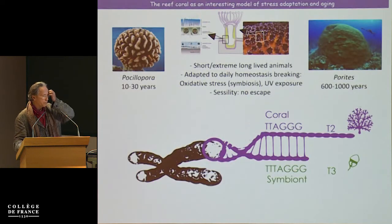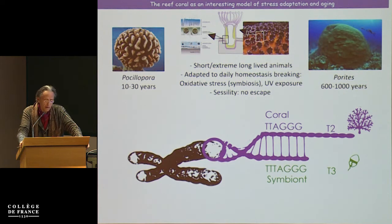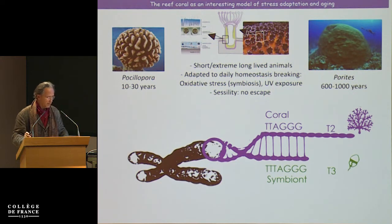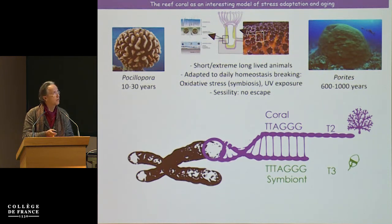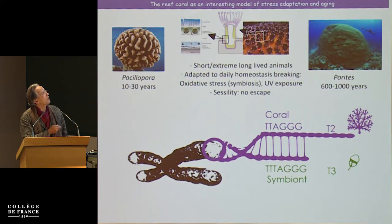The second story starts from the same question but focuses on corals. Corals are animals and are very interesting for research on adaptation and aging for several reasons. This is again the opportunity we now have to study non-model organisms with tools of molecular biology. Corals are colonial organisms — the basic structure is the polyp, but you can consider the colony as a whole individual.